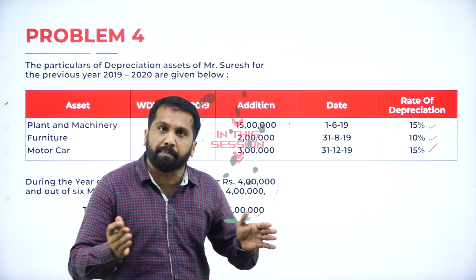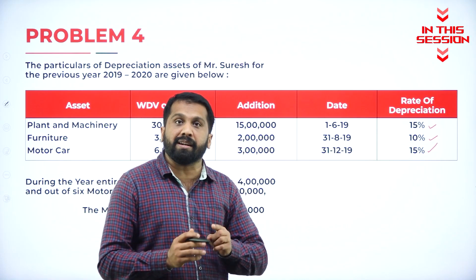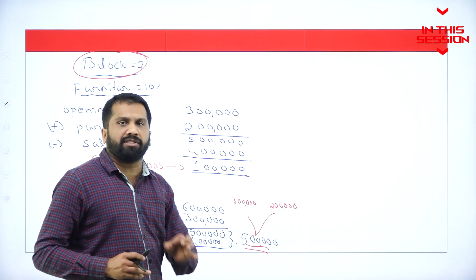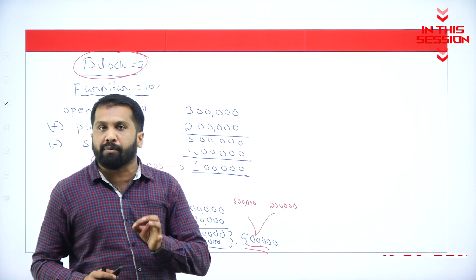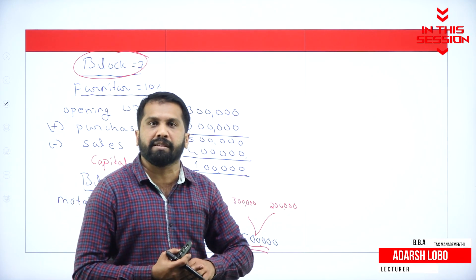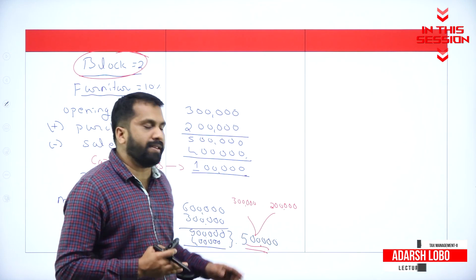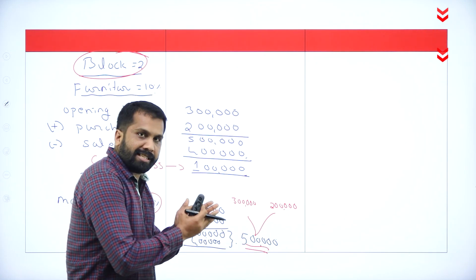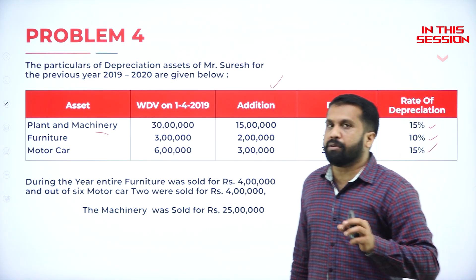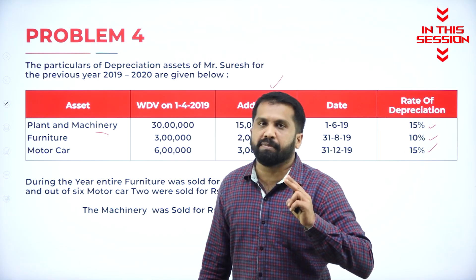A block of assets can be merged if the percentages are the same, but one more condition is that the asset type also should be the same. If the asset was purchased after six months, you have to calculate separately. Anything newly purchased requires extra depreciation of 20 percent.